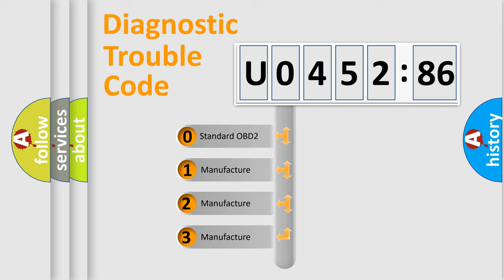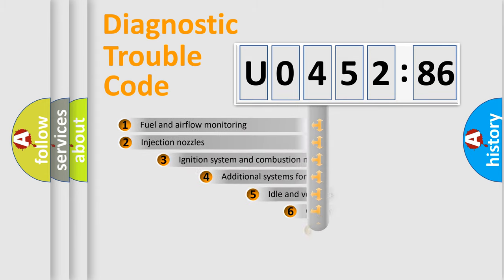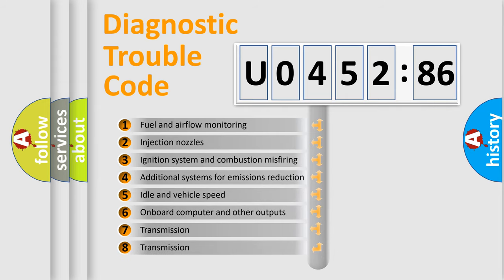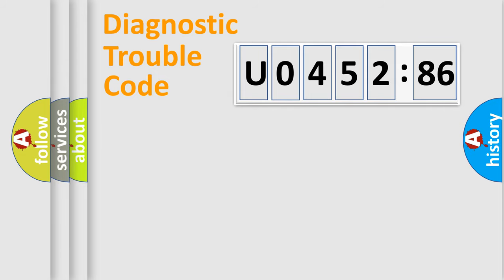If the second character is expressed as zero, it is a standardized error. In the case of numbers 1, 2, 3, it is a more prestigious expression of the car-specific error. The third character specifies a subset of errors. The distribution shown is valid only for the standardized DTC code.